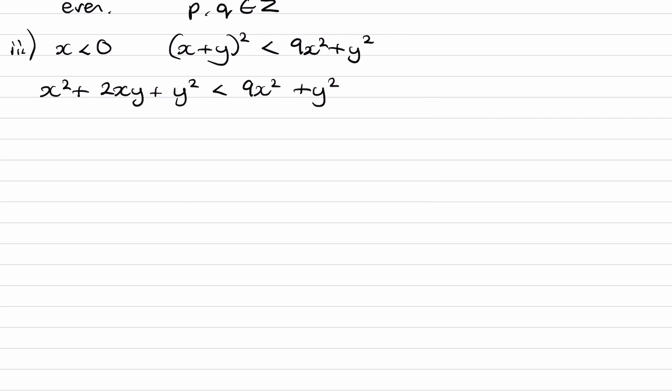We end up with X squared plus 2XY plus Y squared is less than 9X squared plus Y squared. And then I'll take away X squared from both sides. And I'll cancel out these two Y squareds as well. So take away X squared, take away Y squared from both sides. We end up with 2XY is less than 8X squared. So again, just cancel these two out, brought this X squared to the other side.